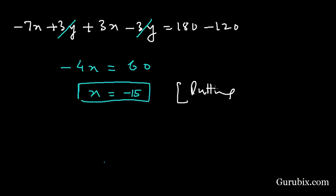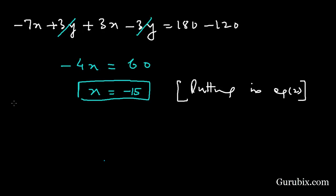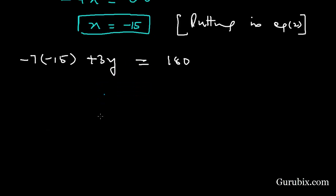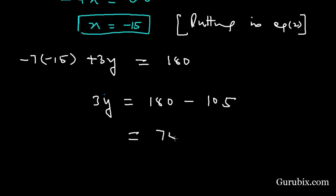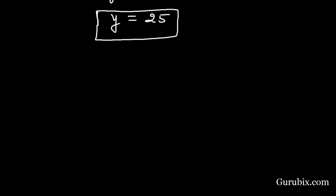Now we substitute x = -15 into equation number two to find y. We have -7(-15) + 3y = 180, which gives 105 + 3y = 180. So 3y = 75, meaning y = 25.